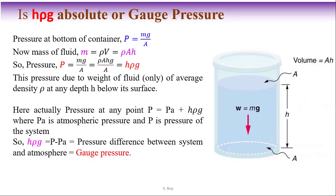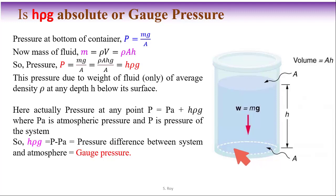While we discuss the measurement of pressure in different process fluids, several times we will use the measurement of pressure with the equation h times rho times g. I want to discuss whether h·ρ·g is gauge pressure or absolute pressure. Consider a particular container with some fluid — any type of liquid. What will the pressure be at the bottom surface?